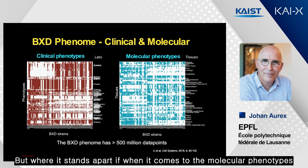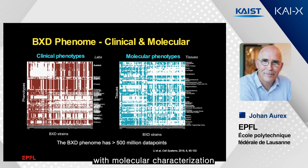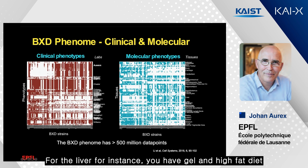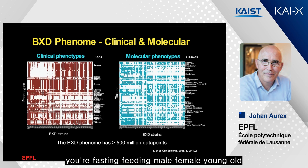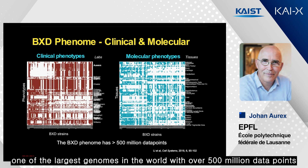Where it stands apart is the molecular phenotypes. Here we have 35, and you rarely in humans will have 35 deep biopsies with molecular characterization. For the liver, for instance, you have high-fat diet and high-fat feeding, fasting, feeding, male, female, young, old — eight different sets of data — which complement each other and make this molecular phenotype one of the largest phenomes in the world, with over 500 million data points.